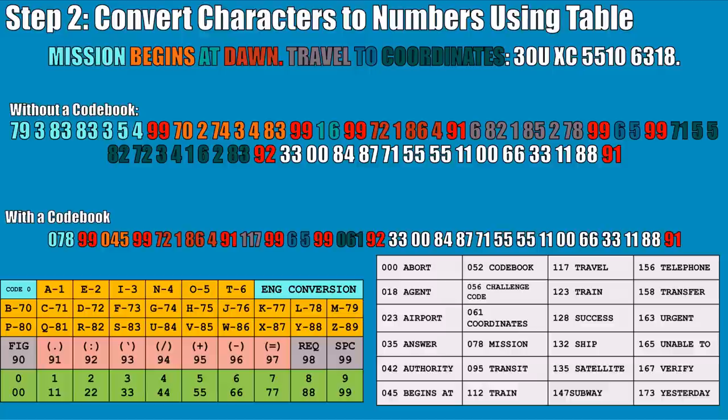For instance, the word 'mission' without the codebook would look like 79 3 83 83 3 5 4. But if we go to our codebook, the code for mission is 0 7 8 — saving quite a bit of effort. It also makes it harder for someone to understand if they don't have the codebook; if someone decrypts this message they just get the numbers 0 7 8 instead of the word 'mission' spelled out for them.